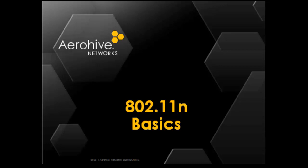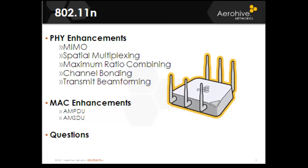Welcome to this training session from AeroHive covering 802.11n Basics. In this session, we're going to cover physical enhancements, including multiple input, multiple output, or MIMO, spatial multiplexing, maximum radio combining, channel bonding, and transmit beamforming. We're also going to cover MAC enhancements, which include A-MSDU and A-MPDU.